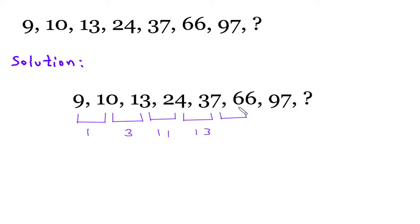Difference between 66 and 37 is - so 66 minus 37 will be 29.